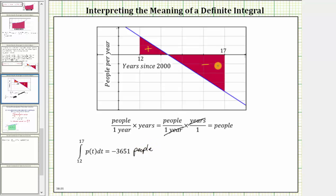We can also view this area as the accumulation of the change in population over the time period from t equals 12 to t equals 17. And therefore, the area represents the total change in population over this time period. And t equals 12 represents the number of years since 2000, which means t equals 12 corresponds to the year 2012, and t equals 17 corresponds to the year 2017.